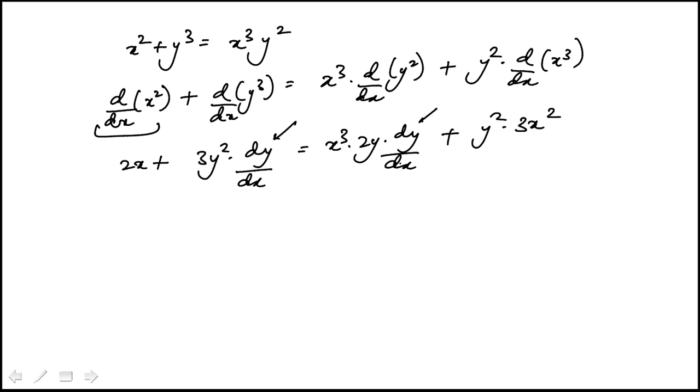I just need to isolate that term, so I'm going to move this guy over here. Let me check this. Yes, that's 2x. So I have 3x squared y squared minus 2x. And then that goes in.